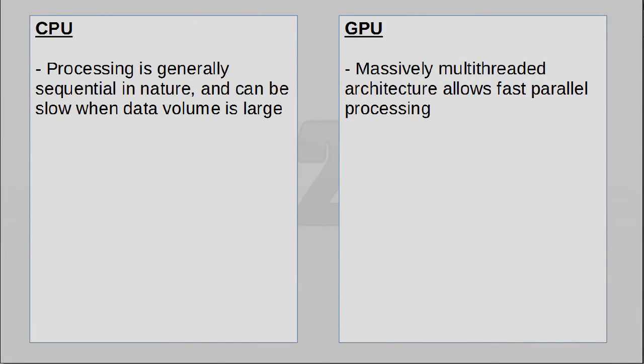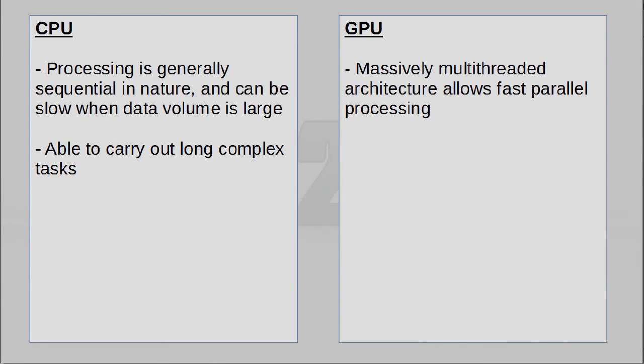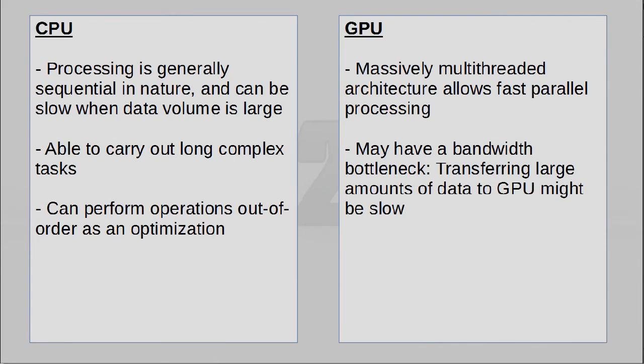I guess we should wrap up by answering one important question: why don't we just use the GPU all the time? The truth is the cores on a GPU, while many, are not really optimized to perform a large string of tasks at a time — your CPU is better at that. Your CPU can do very complex operations; it even does certain operations out of order because it knows that will be faster. Another possible bottleneck for a GPU is bandwidth — you still have to transmit all your data to a GPU, let it do its processing, and then read it back. Both these components have their parts to play, and neither one will subsume the other anytime in the near future.